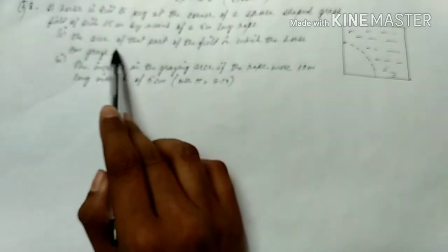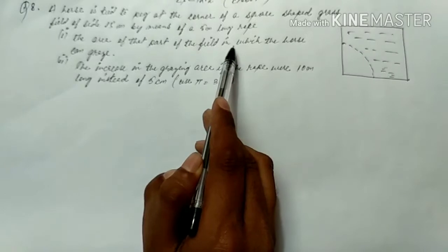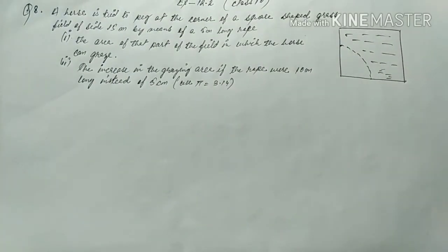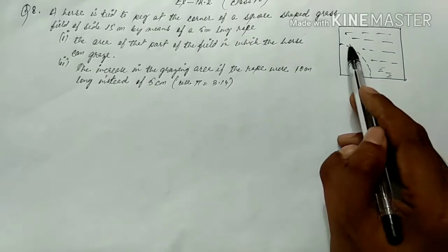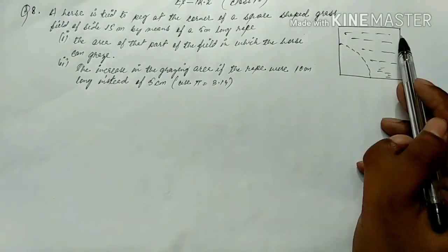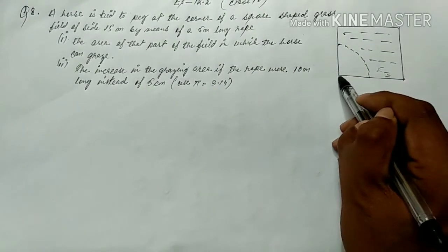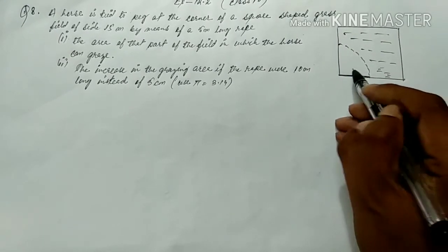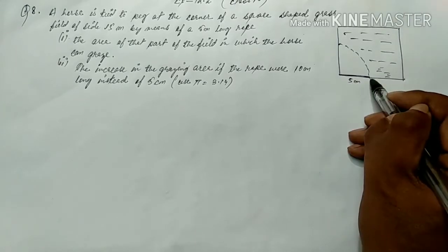Now we are going to find the area of that part of the field in which the horse can graze. This is a figure, a square field. If the rope is 5 meters, it is 5 meters.